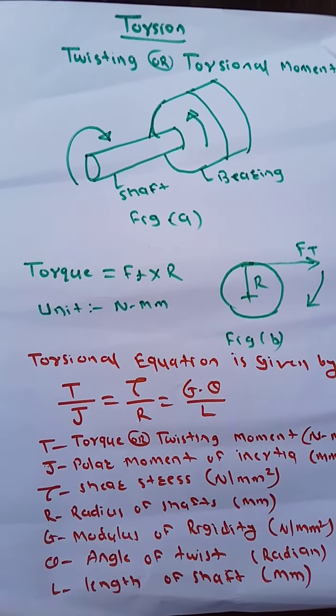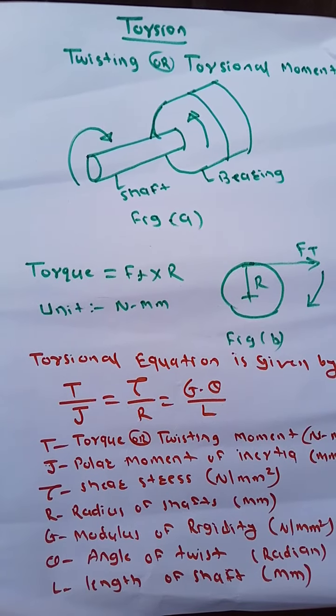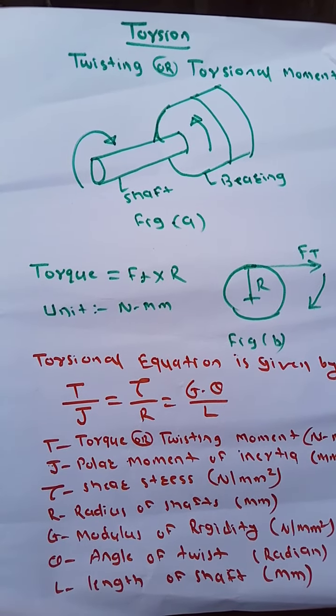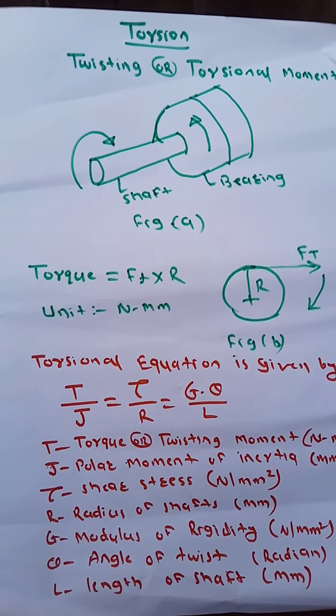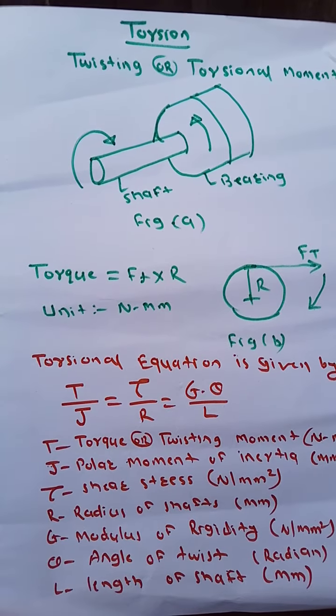This torsion is also known as torque. See Figure B - the torque is the tangential force multiplied by radius. Its unit is Newton mm.